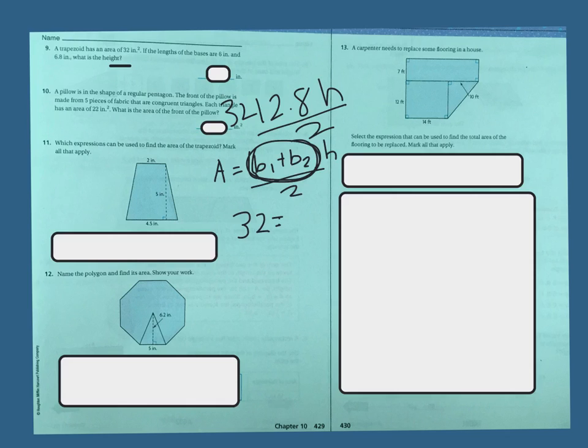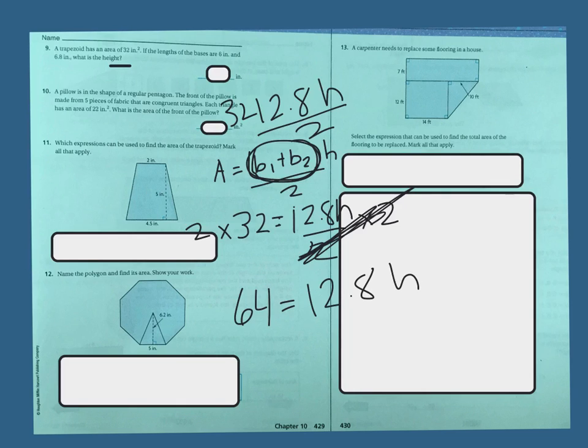We know it's all divided by 2, and we know our area is 32. 32 equals 12.8H divided by 2. So now let's get rid of this. We want to try and isolate this H. So if I multiply both sides by 2, then I'll be able to get rid of this 2 on the bottom. 2 times 2 is 64. So now I've got 12.8H. Now I want to get this H alone, so I'm going to have to divide both sides by 12.8 because opposite of multiplication is division. So now I have 64 divided by 12.8, which is 5.